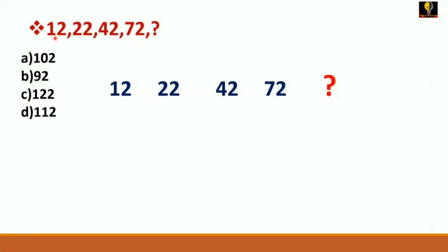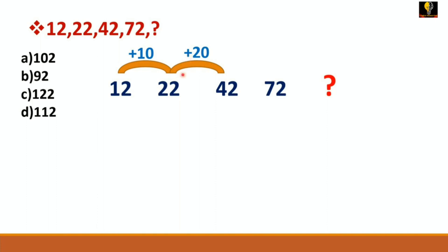So write down 12, 22, 42, 72, and the number to find. Look at the basic difference between the first two numbers: 12 plus 10 gives 22. Then from 22 to 42, the difference is plus 20. Now observe: 72 minus 42 gives plus 30.